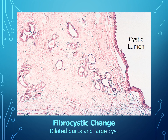Here is the histology of fibrocystic changes. You can see a gigantic dilated duct that has formed a cyst, with an epithelial lining of myoepithelial cells and luminal cells. There are other little dilated ducts present, and all the pink material is fibrosis. This is all fibrocystic change — a non-proliferative lesion of the breast.